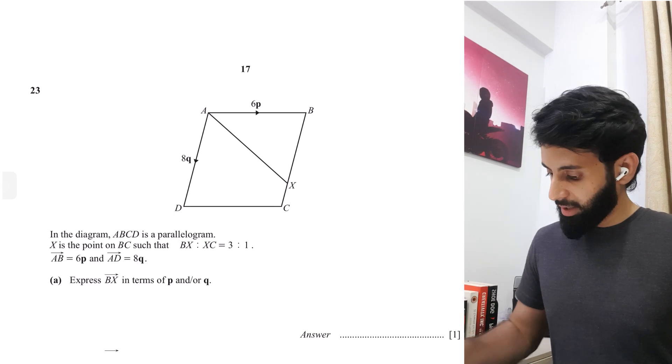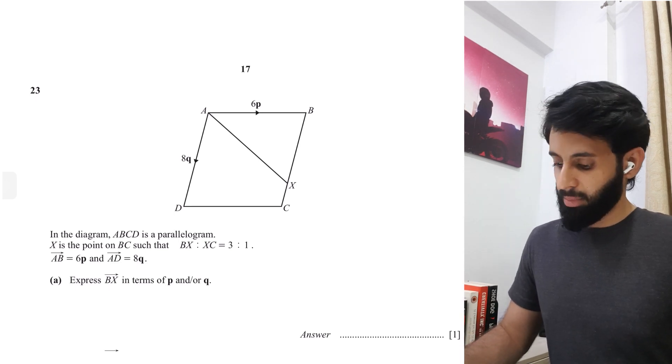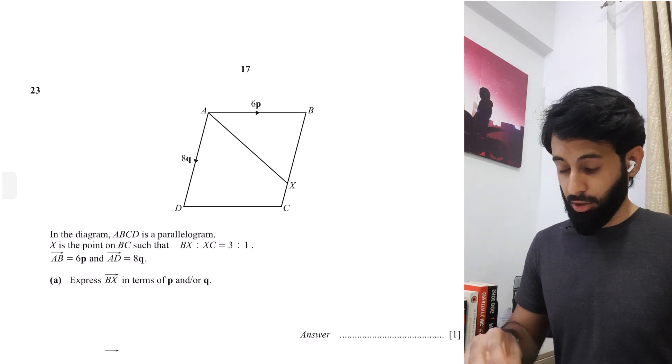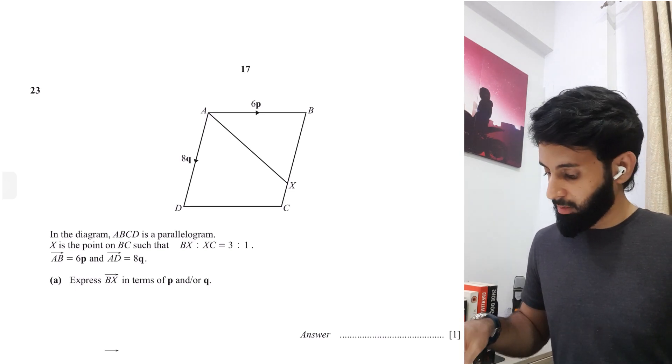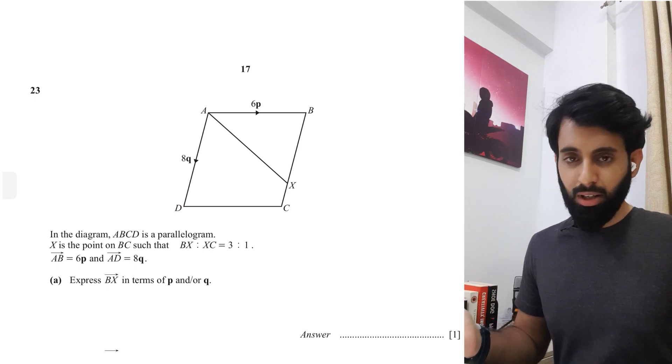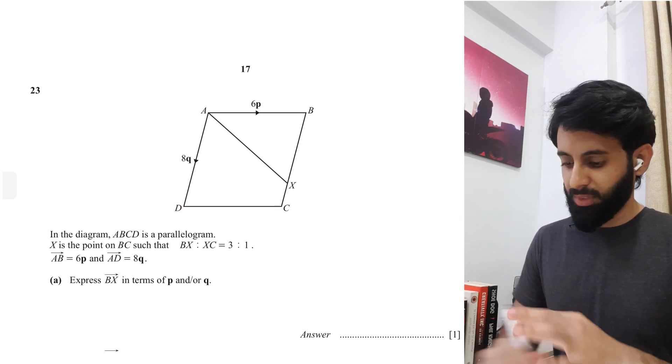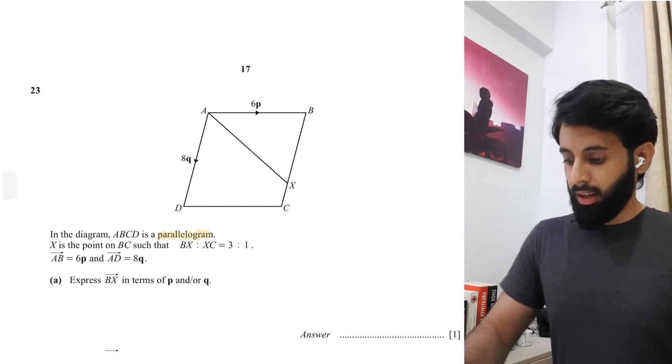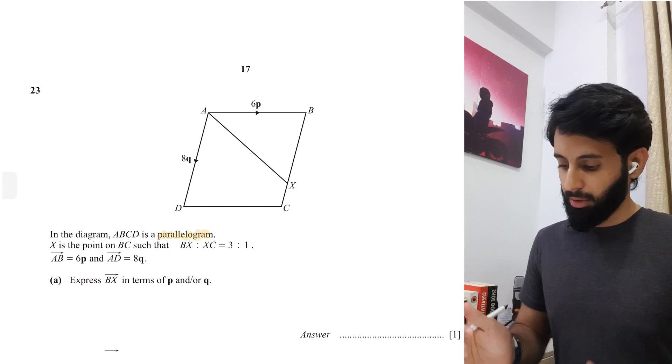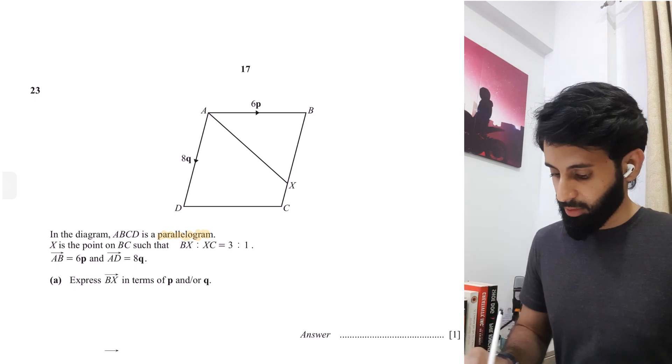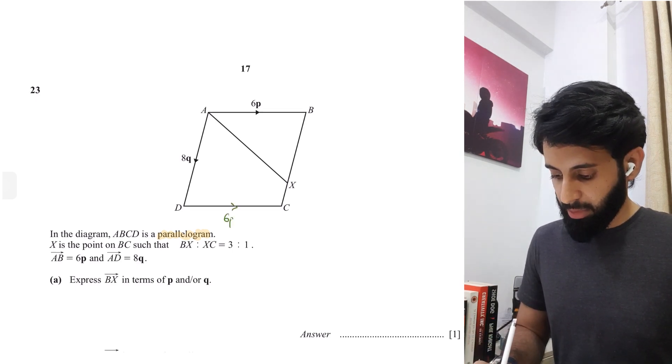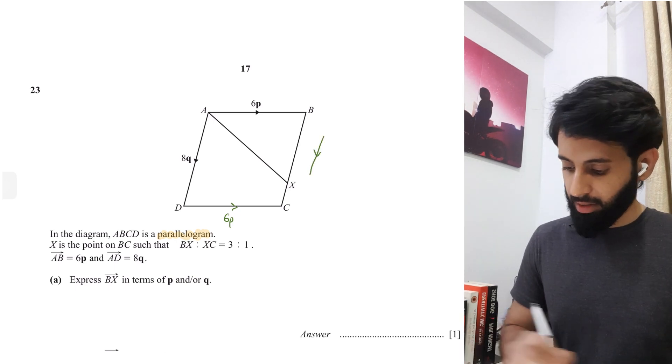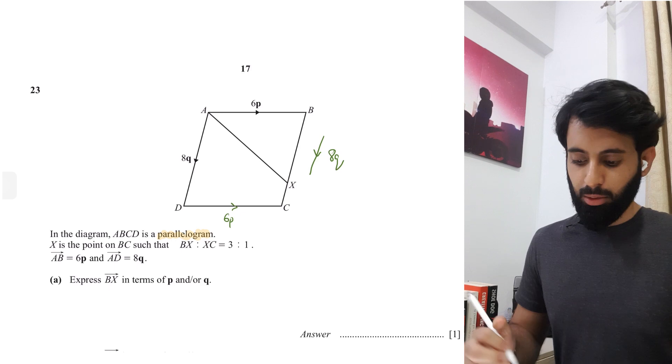Let's get straight to it. The diagram shows ABCD is a parallelogram. X is the point on BC such that BX is to XC in the ratio 3 is to 1. You're given AB equals 6P and AD equals 8Q. The second you see the word parallelogram, you can find out a couple of vectors instantly. AB is 6P, so D to C is also 6P because it's a parallelogram, and B to C is 8Q.